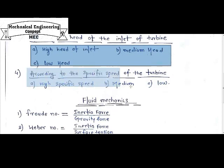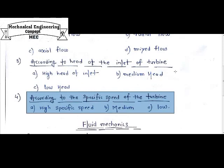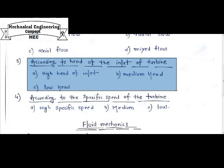The fourth classification is according to the specific speed of the turbine, denoted by the symbol NS. There are three basic specific speed ranges on the basis of which we can categorize turbines: high specific speed, medium specific speed, and low specific speed — similar to head ranges but with a different unit.